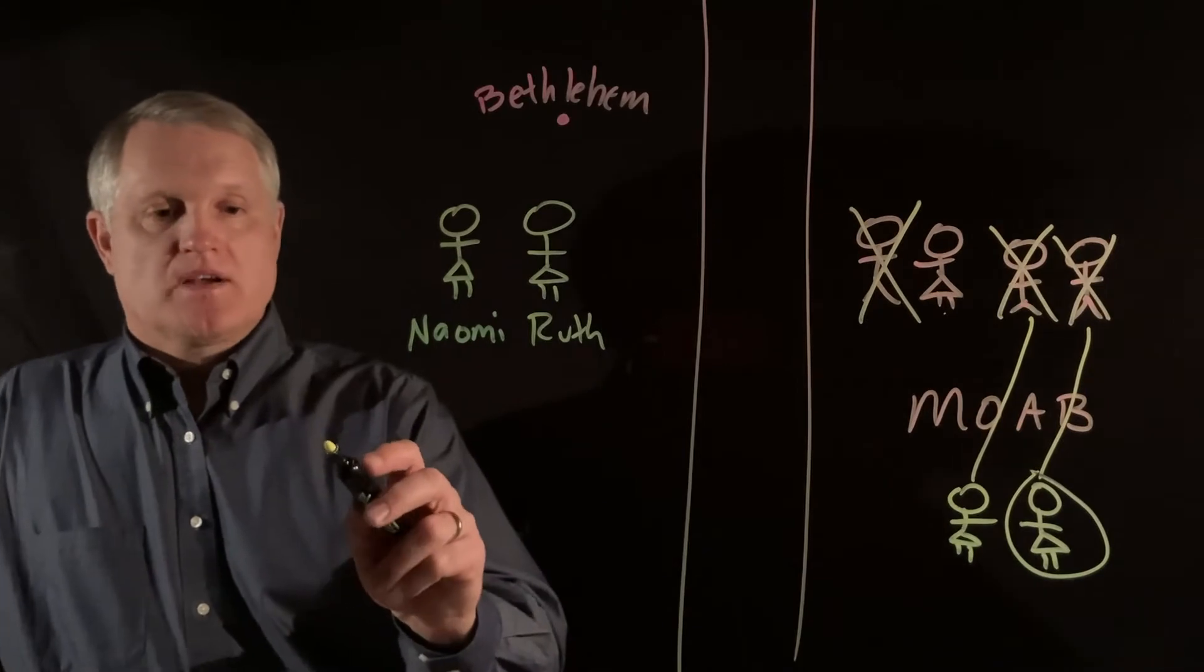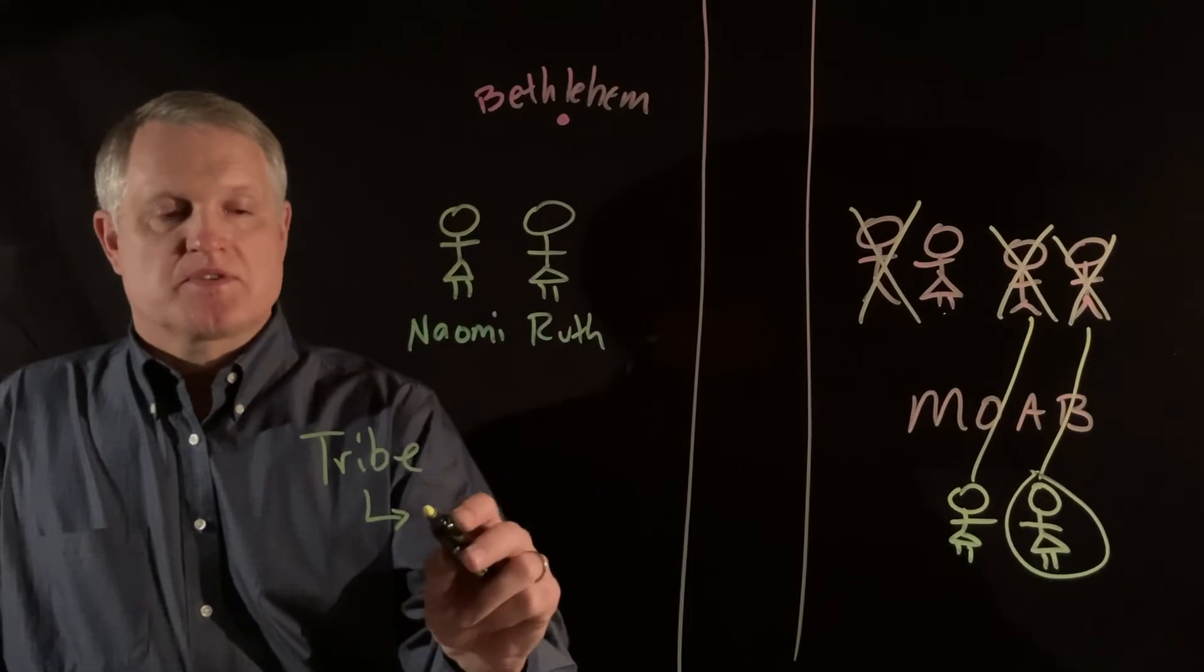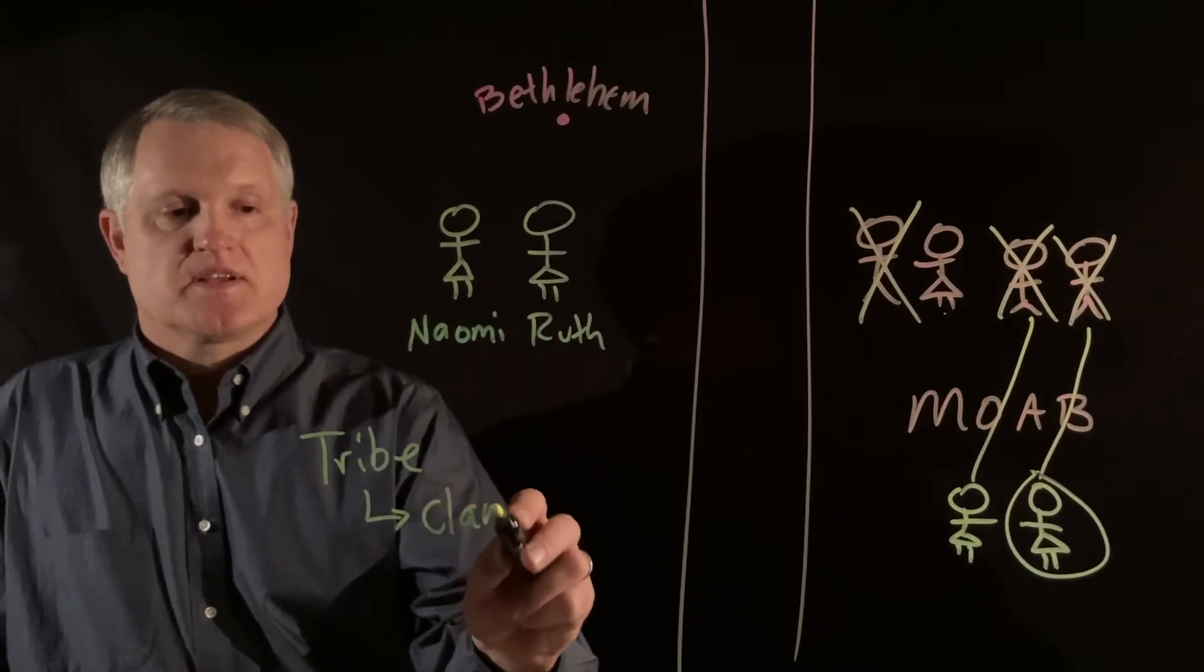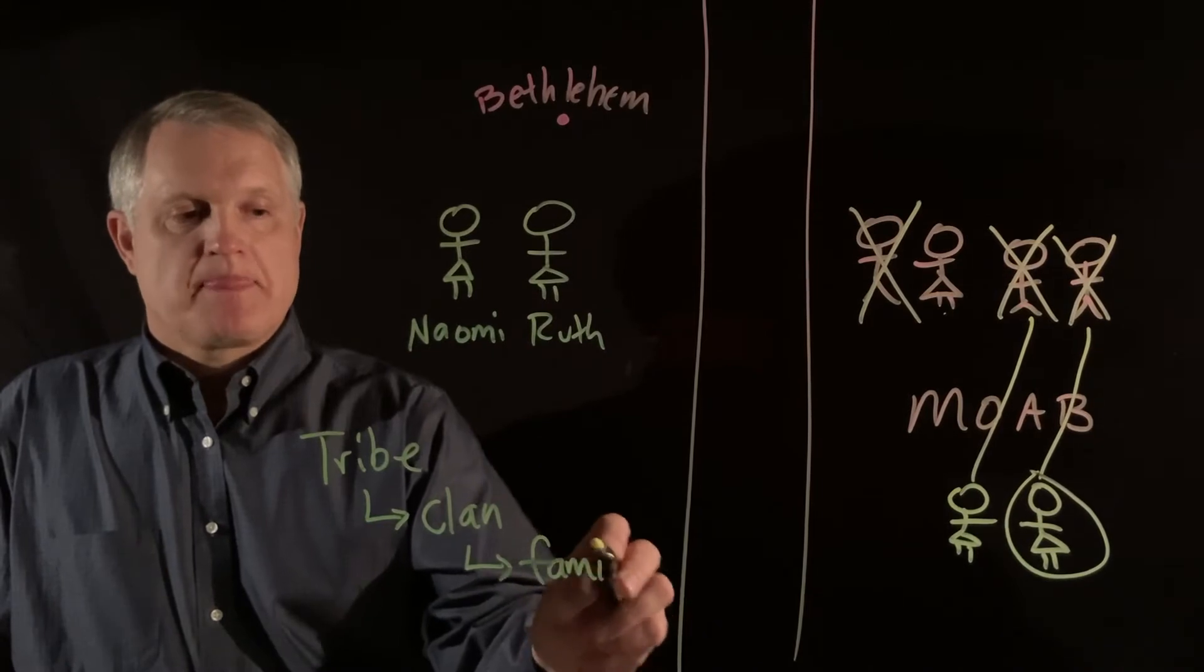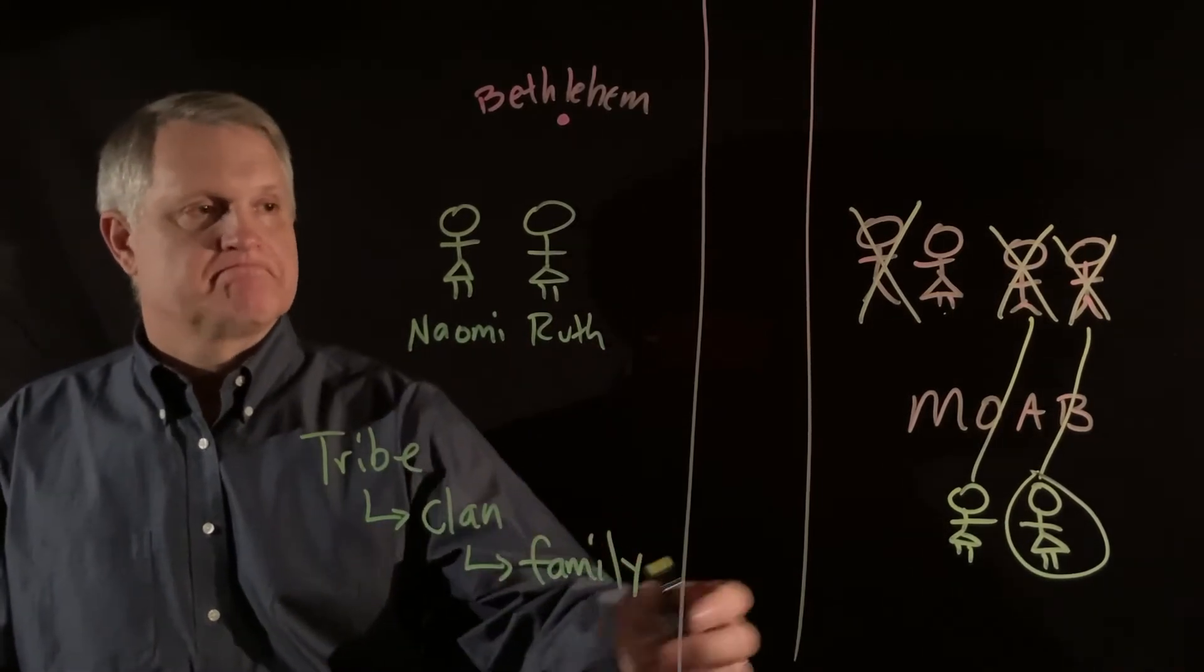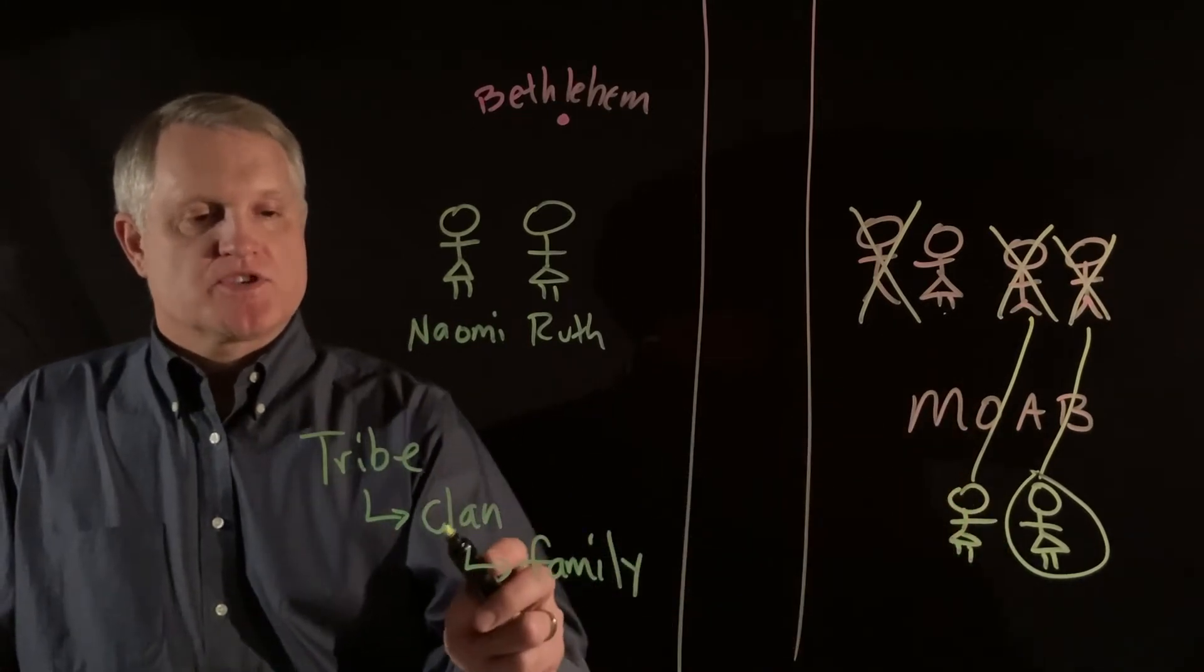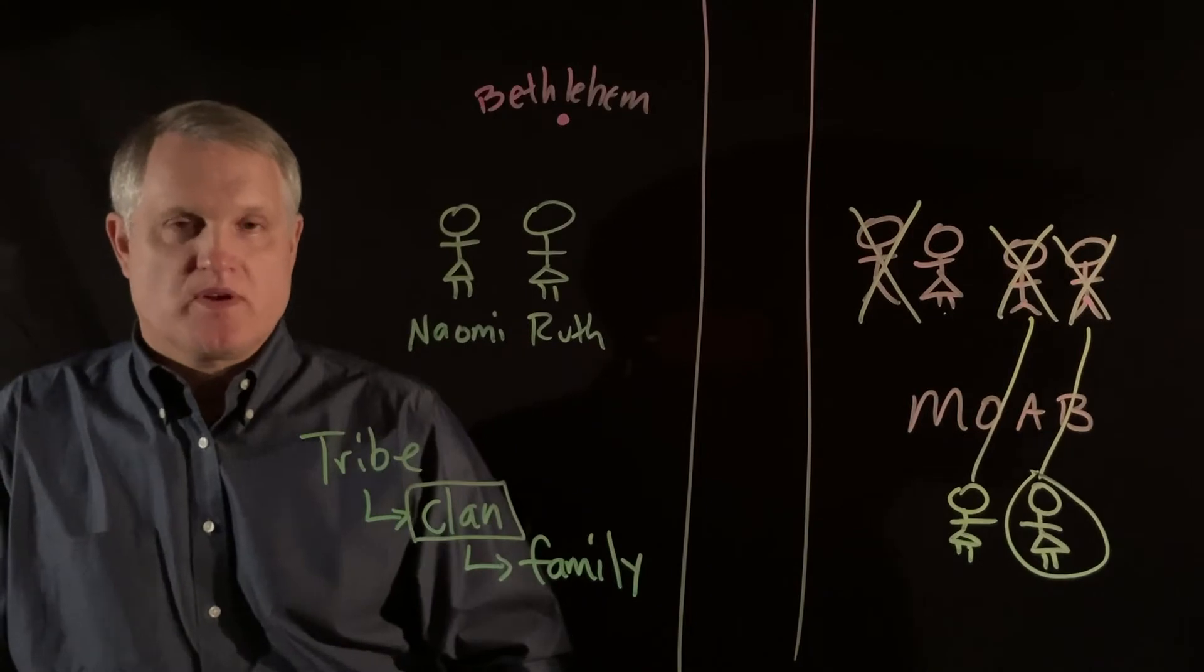The way our social structure is set up at this time is that tribes are composed of clans, and clans then are composed of families. The family of Naomi has been decimated. So she is really depending, when she comes back to Bethlehem, on being supported by her clan.